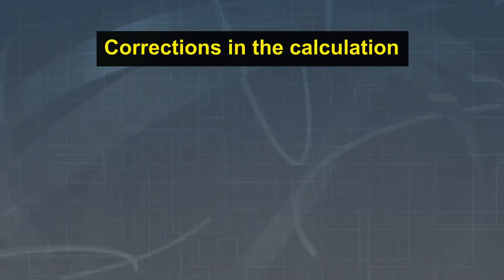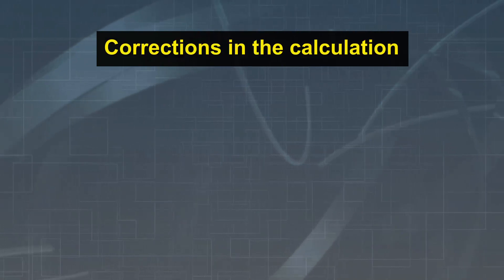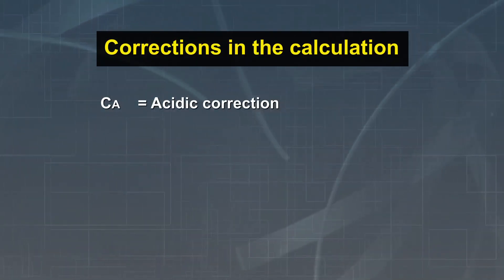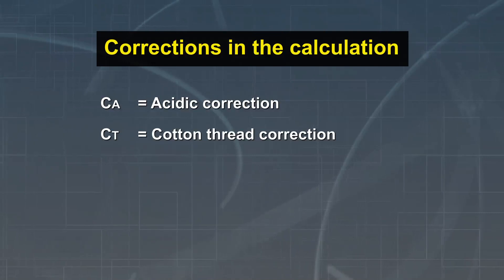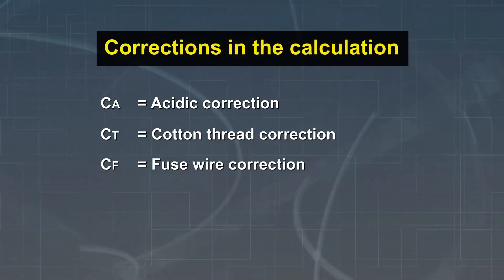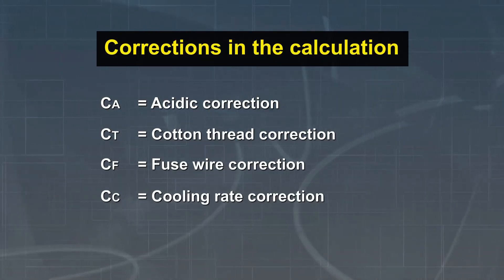Some subtractions are done in the above formulae. The heat dissipated from the acidic reactions, the calorific value of the cotton, the fuse wire used to ignite the fuel. At last, the rate at which the metal cools needs to be added.